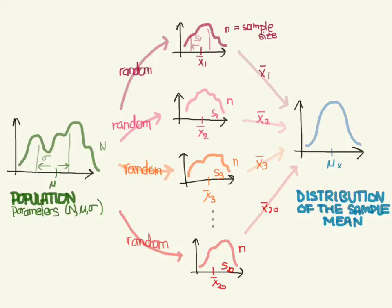This distribution of the sample mean has its own mean, which is going to be called mu sub x-bar because we're talking about the sample mean distribution. And it also has its own standard deviation, which is going to be called sigma sub x-bar. Now notice one thing I did — I drew this distribution having more of a normal curve shape, not the weird bumpiness you see in the other distributions. And that's one of the properties we're going to see here.